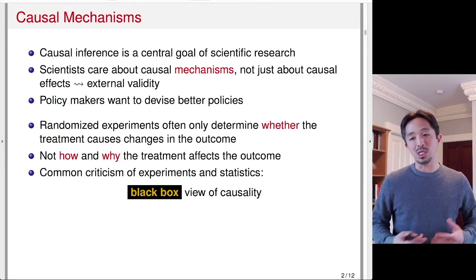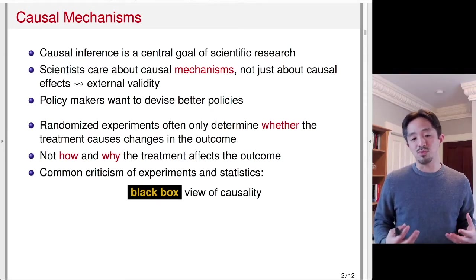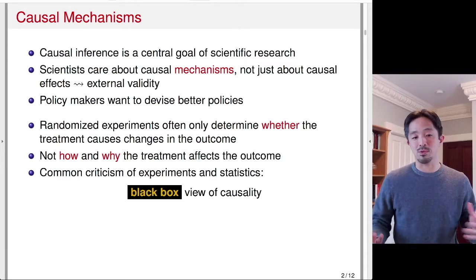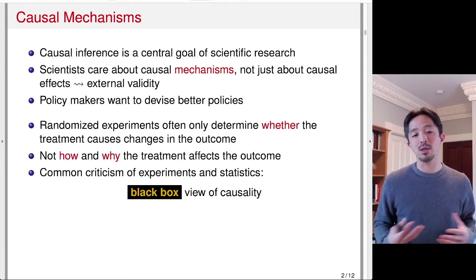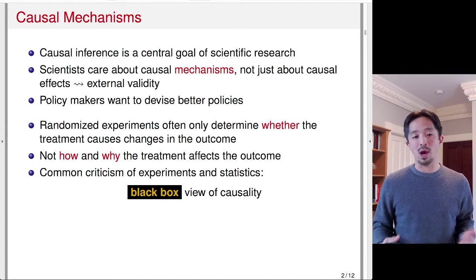This leads to the common criticism of experiments and statistics. In general, there is this black box view of causality. We can estimate whether treatment affects the outcome, but we don't really understand why and how that happens.